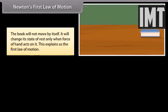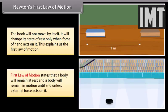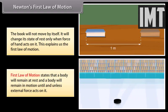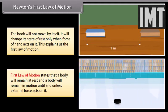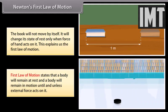The book will not move by itself. It will change its state of rest only when force of hand acts on it. This explains the first law of motion. First law of motion states that a body will remain at rest and a body will remain in motion until and unless external force acts on it.